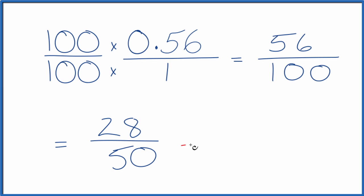But we can reduce this again as well. They're both even. 28 divided by 2 is 14, and 50 divided by 2 is 25. And we can't simplify this any further.